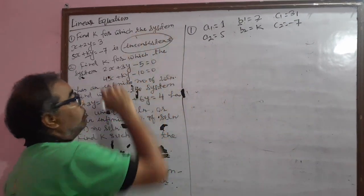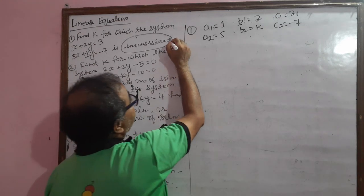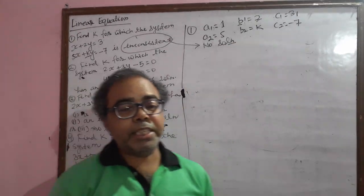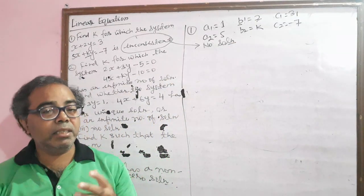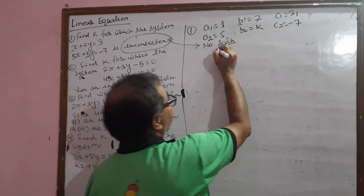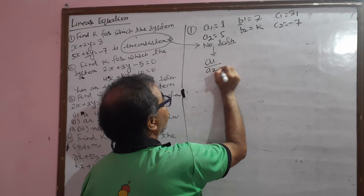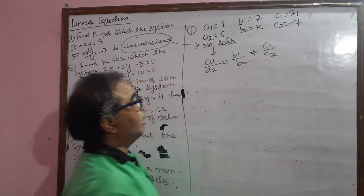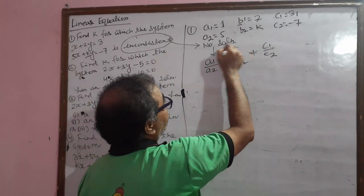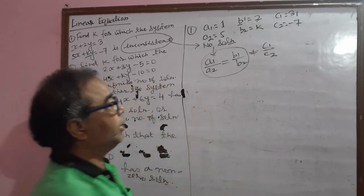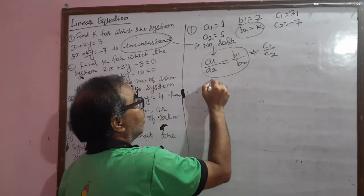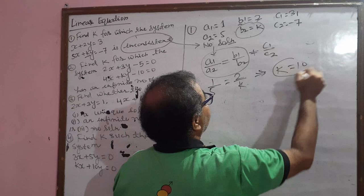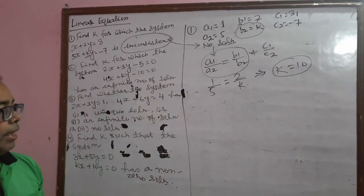Inconsistent means no solution. If the two linear equations have an inconsistent system, there is no solution. For no solution, we apply the condition a1 by a2 equal to b1 by b2, not equal to c1 by c2. From these, we get the value of k because k appears in b2. So we can say 1 by 5 equal to 2 by k, giving k equal to 10. This is the answer.